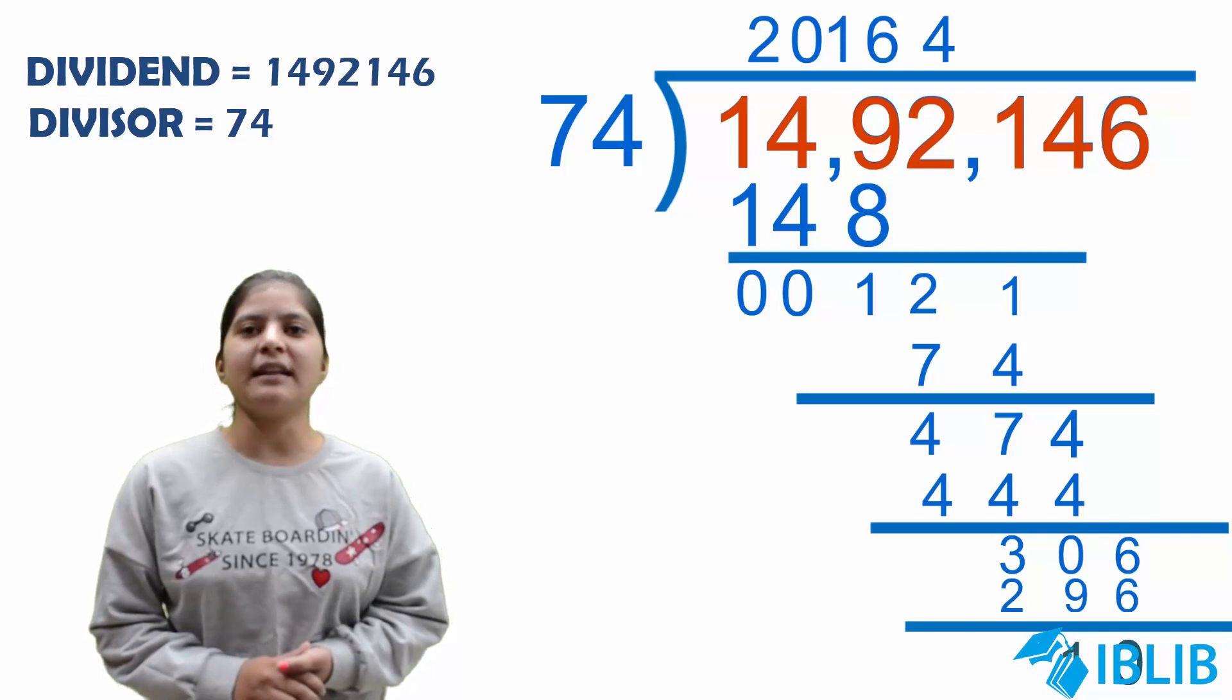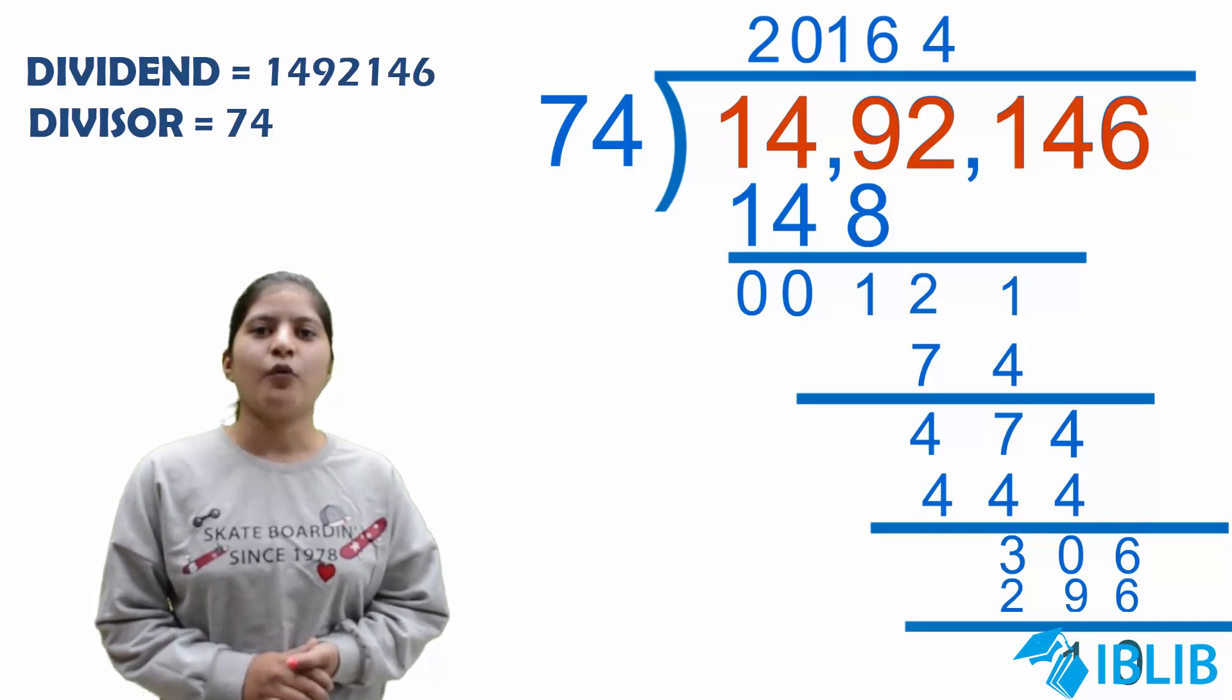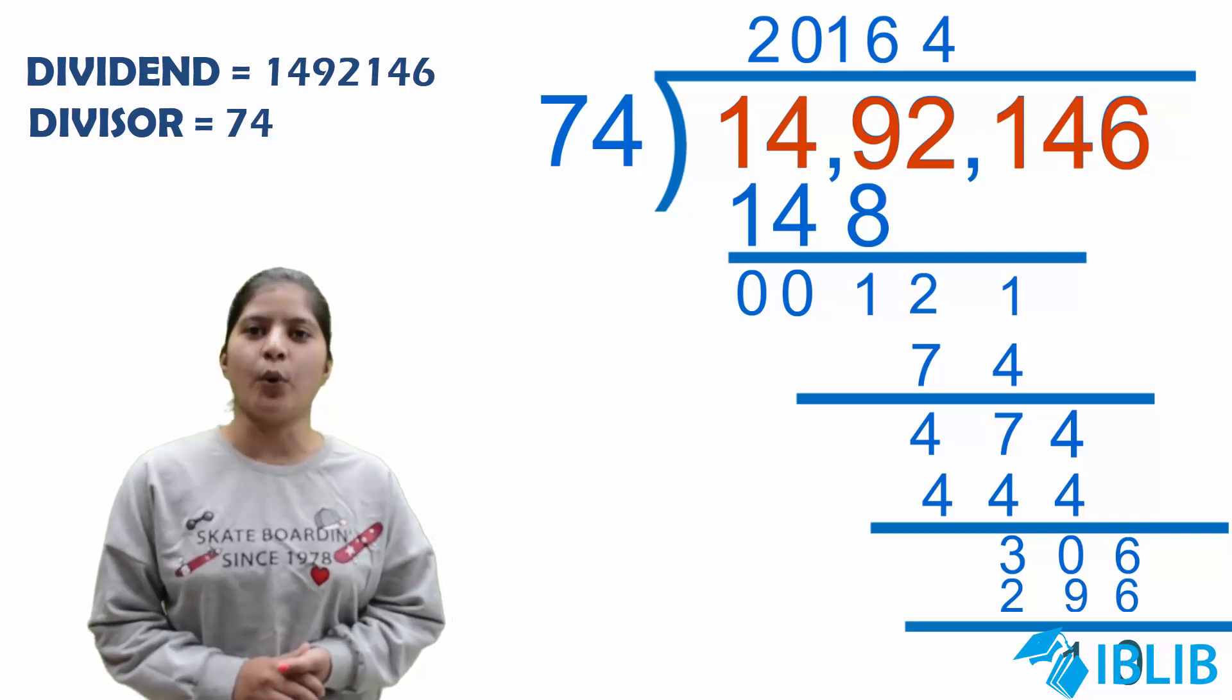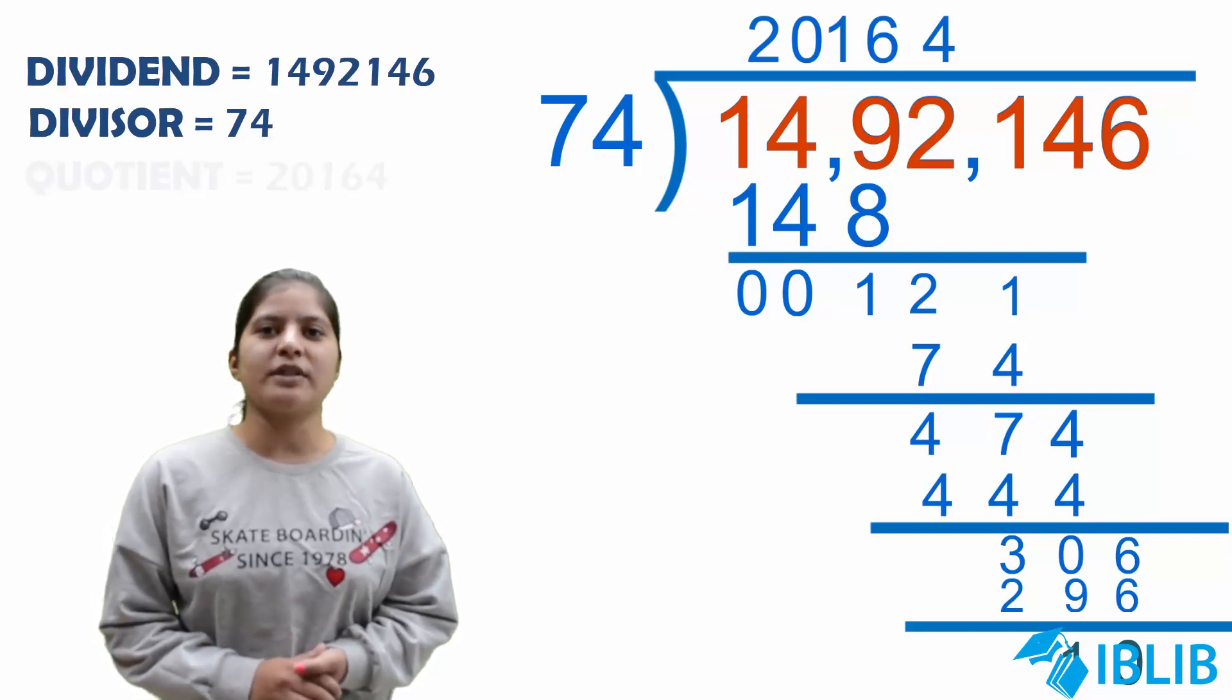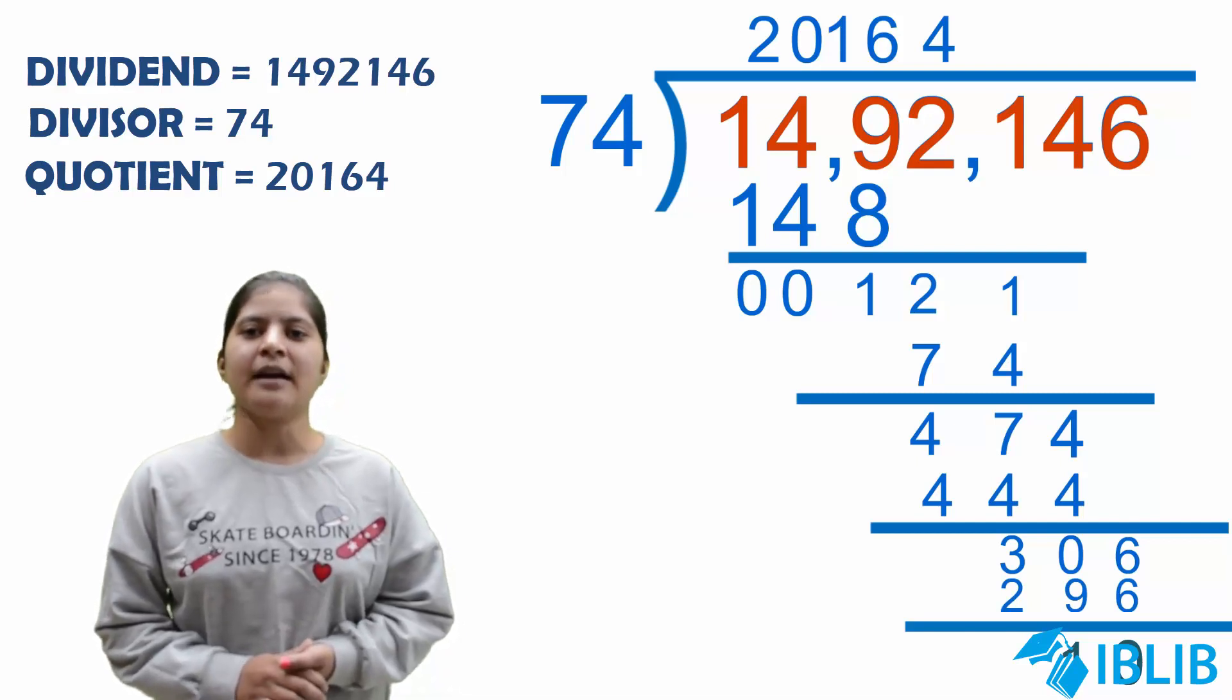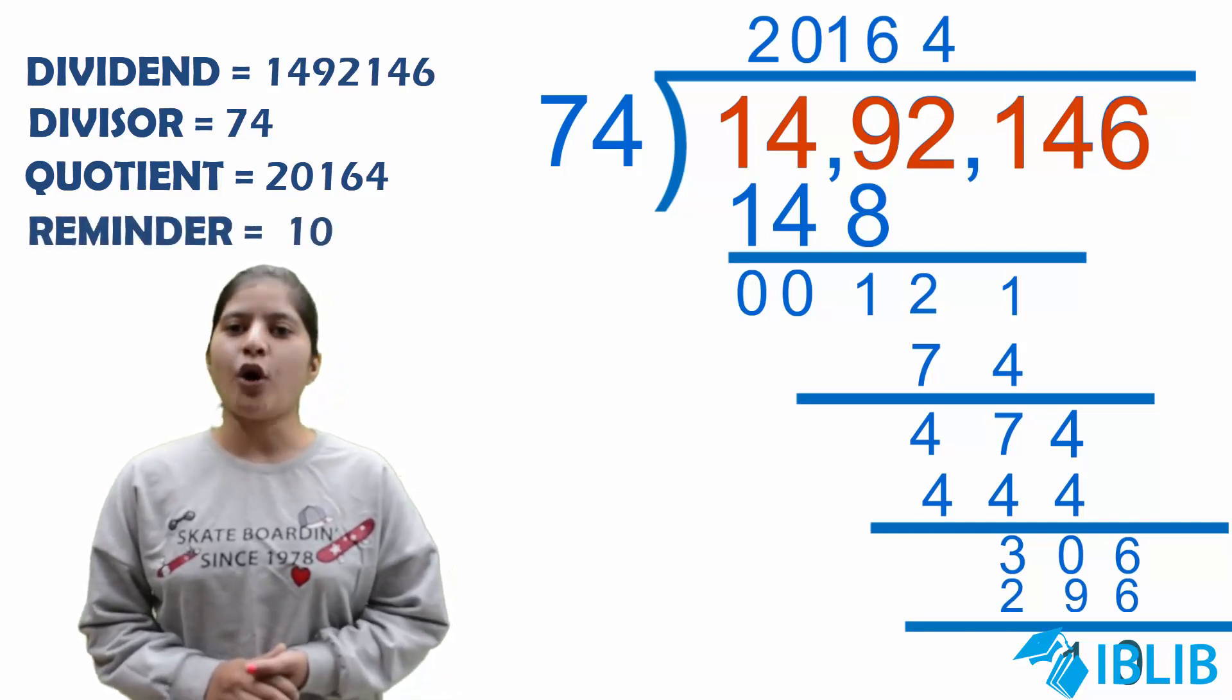Hence, we can say that when we divide 1,492,146 by 74, we get 20,164 as quotient and 10 as remainder. That's all for today.